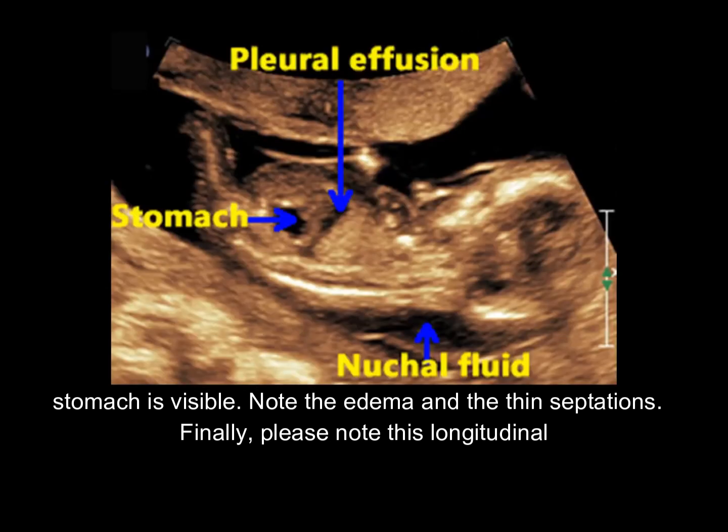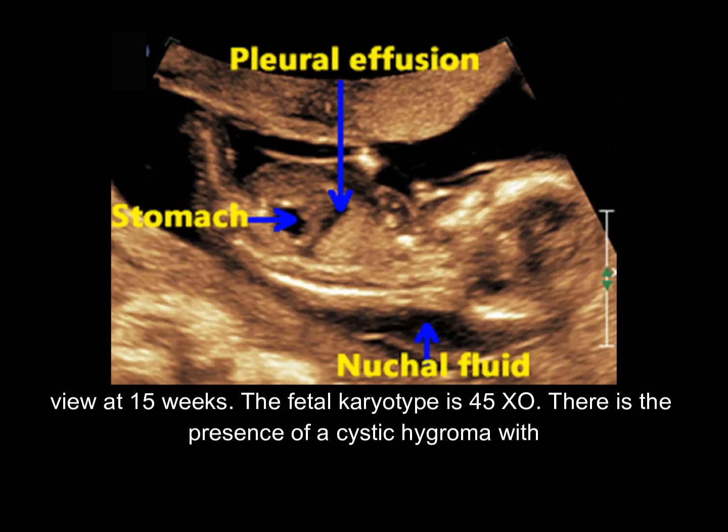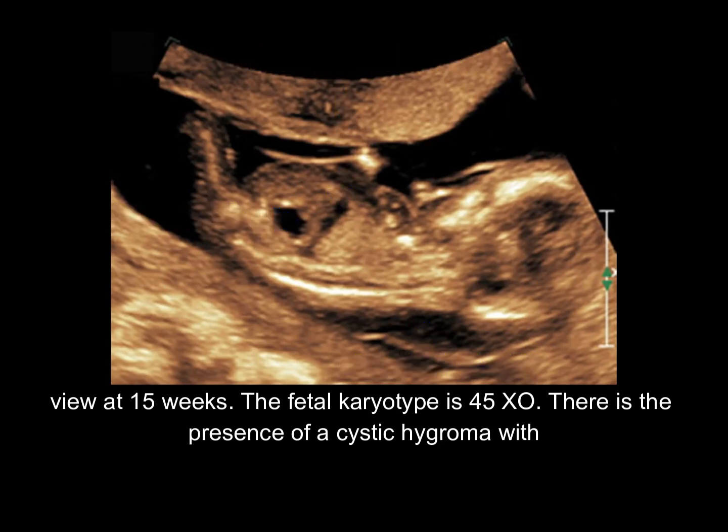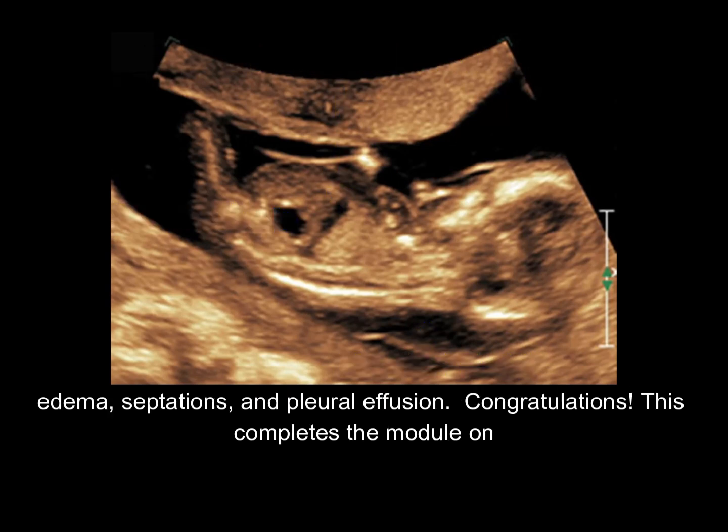Finally, note this longitudinal view at 15 weeks. The fetal karyotype is 45,XO. There is the presence of a cystic hygroma with edema, septations, and pleural effusion.